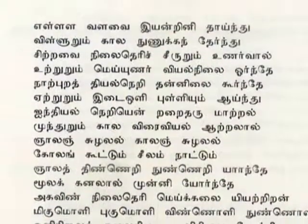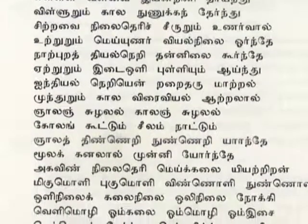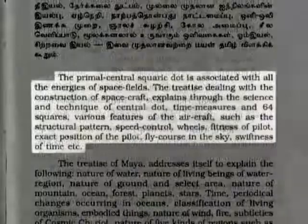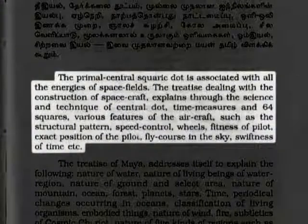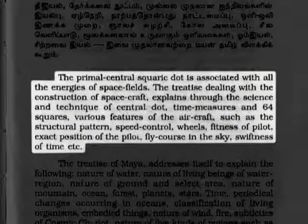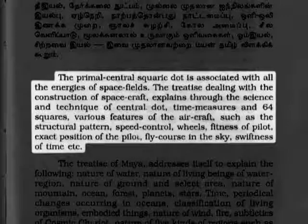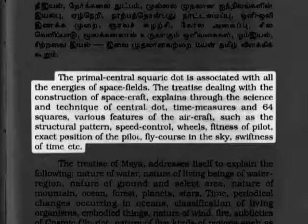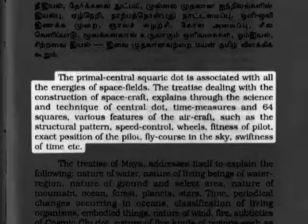One example of the description of these devices is found in verse 790. It reads: 'The primal central square dot is associated with all the energies of space fields. The treaties dealing with the construction of spacecraft explain through science and technique of central dot, time measures, and 64 squares. Various features of the aircraft, such as the structural pattern, speed control, wheels, fitness of pilot, exact position of pilot, fly course in the sky, swiftness of time, etc.'